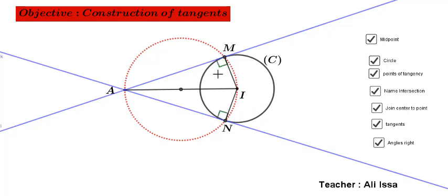Since these two angles are right angles, consequently, A-M and A-N are two tangents. Now, I will change the position of A and observe by your own what is happening in the figure.